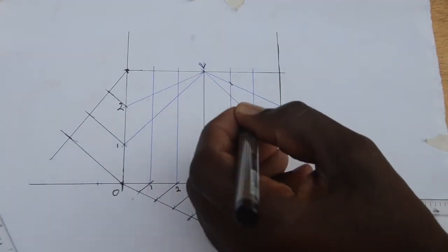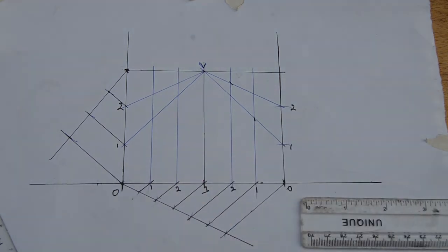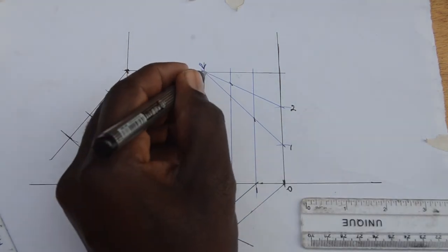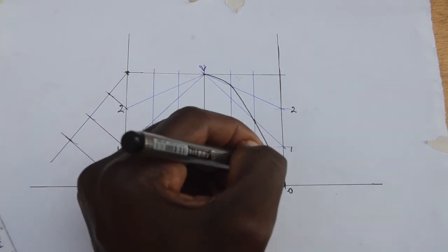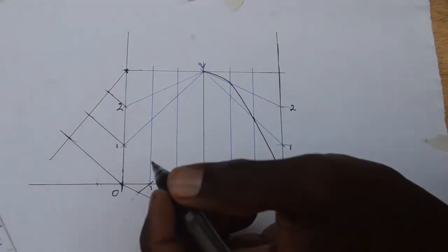Mark off where the corresponding lines meet, and later join these meeting points using freehand to finally get the parabola.